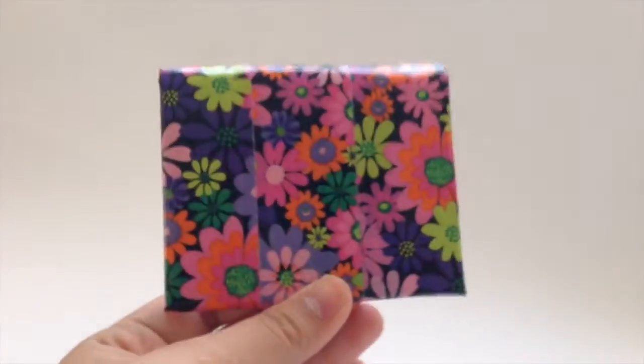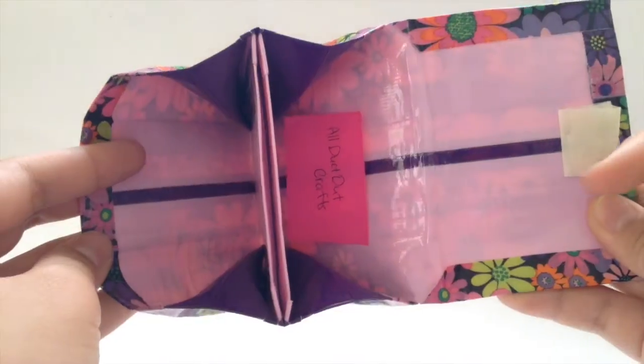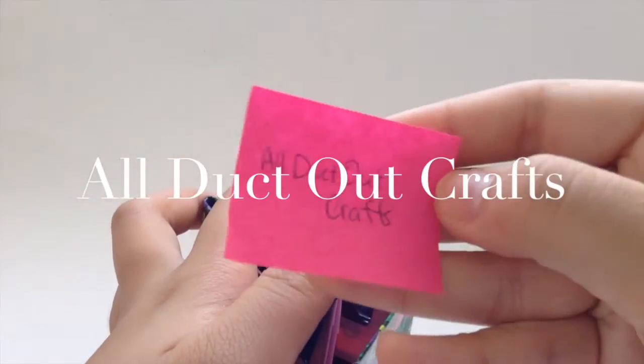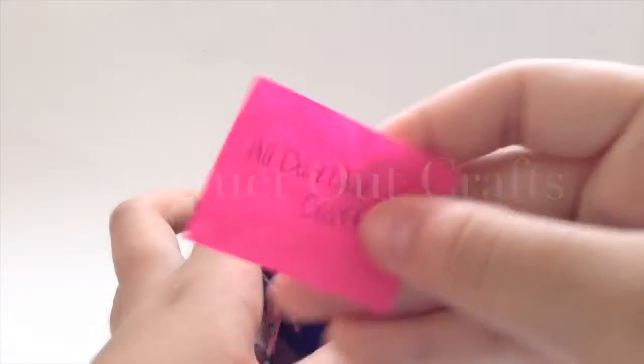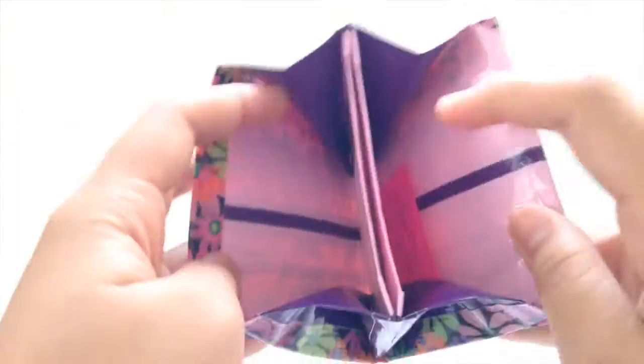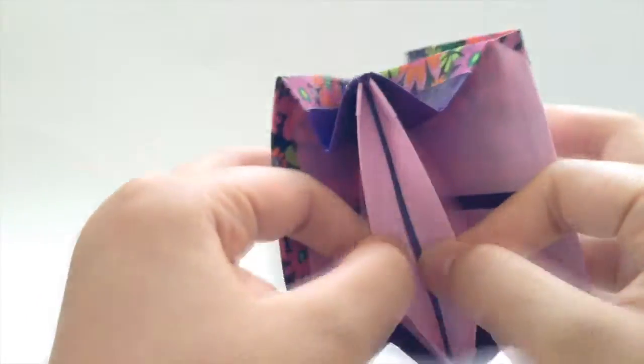Then I have this mini accordion. The seam is clear taped once again and it's a collab with All Ducked Out Crafts on YouTube, so you should go check her out. The seam here is clear tape as you can tell and it's dark purple with baby pink.